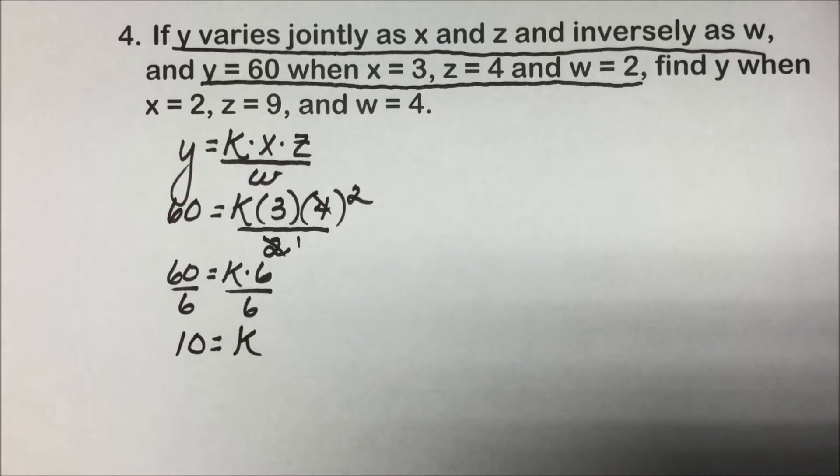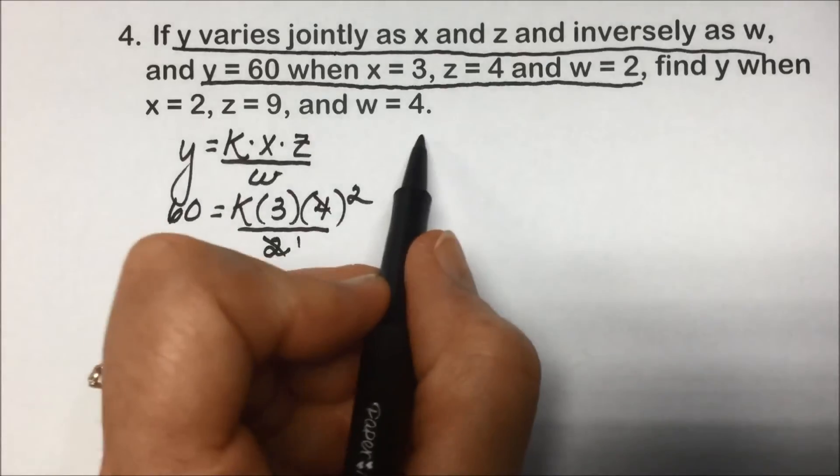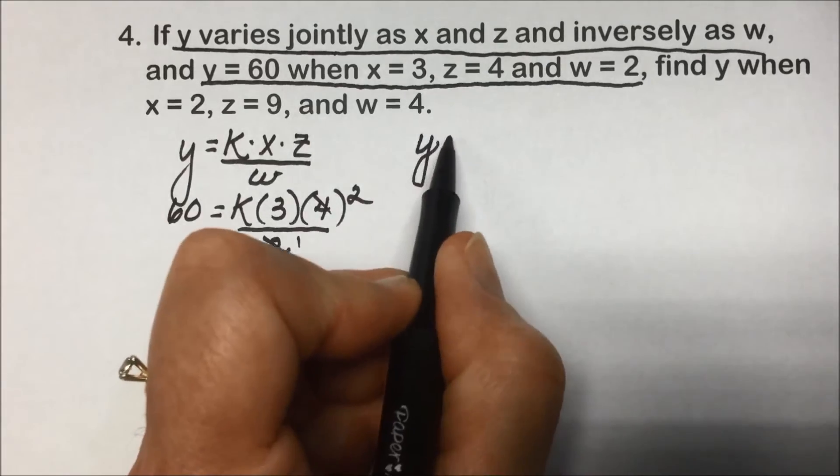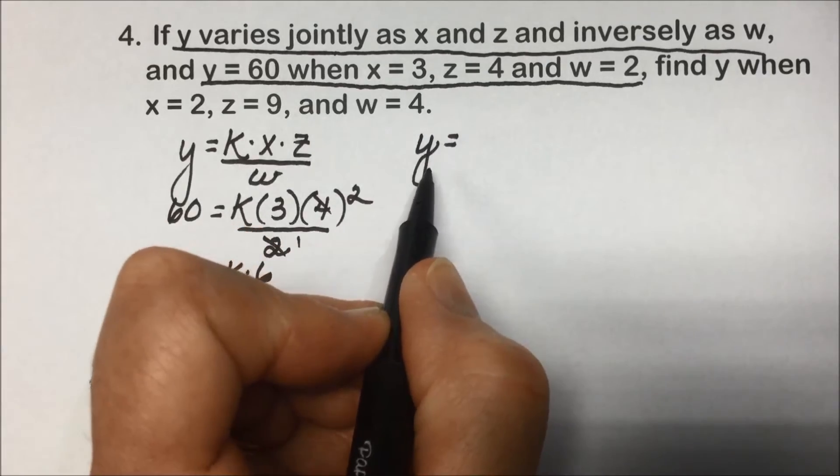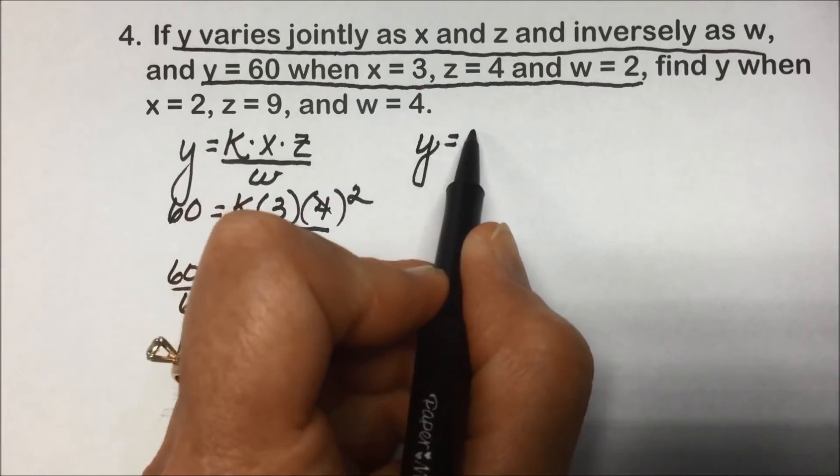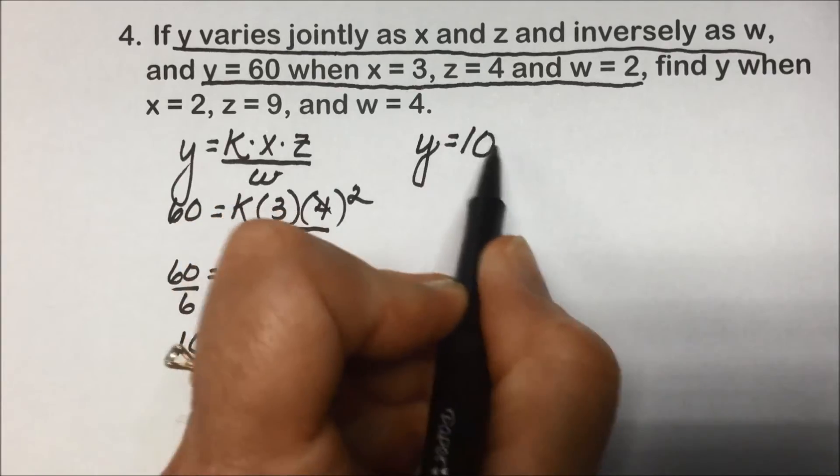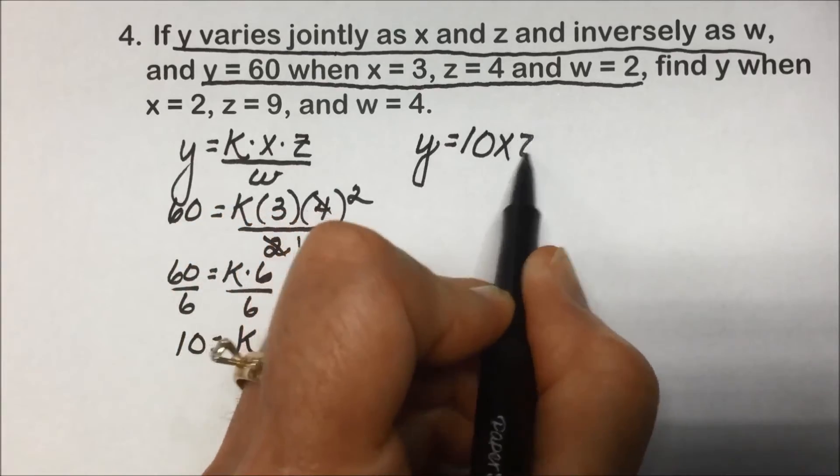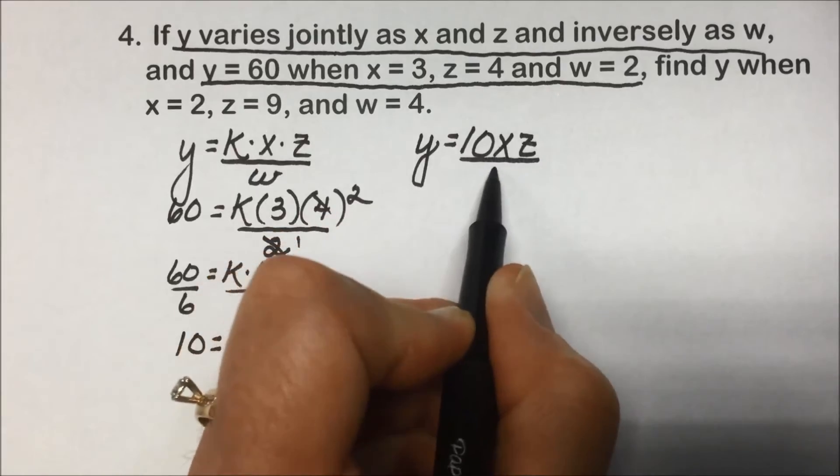That allows us to replace K in a more complete combined variation formula of Y is equal to 10 times X, Z over W.